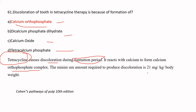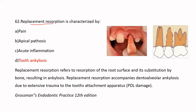Replacement resorption is characterized by tooth ankylosis. It is not associated with pain or apical pathosis as characteristic features. Replacement resorption involves resorption of the root surface and substitution by bone, resulting in ankylosis. This accompanies dental ankylosis due to extensive trauma to the tooth attachment apparatus, the periodontal ligament.